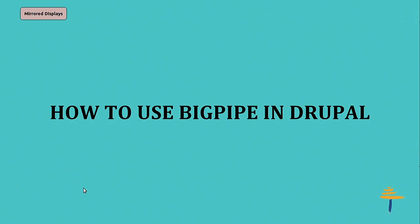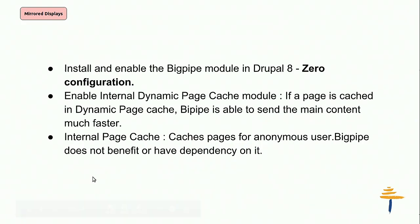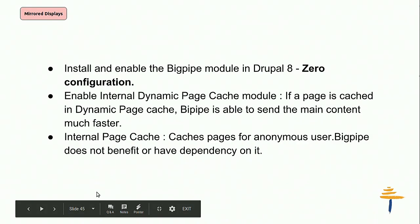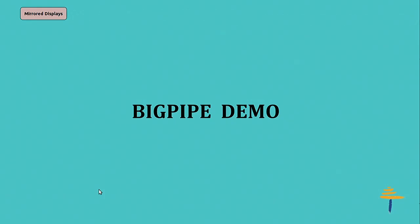How do we use BigPipe in Drupal? It's really simple — it's a no-configuration module. You just need to enable the module and there is no configuration associated with it. It works with the internal dynamic page cache, using it to render static content first before dynamic content. It doesn't affect the internal page cache because it works only for sessions of the user.